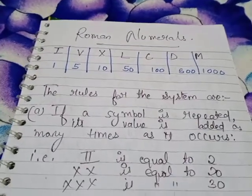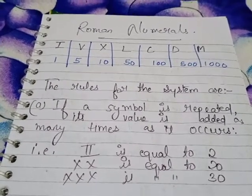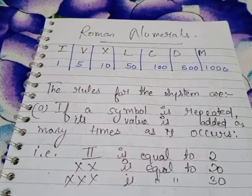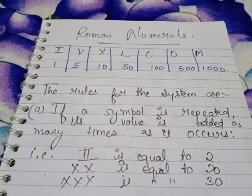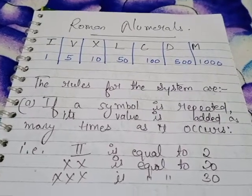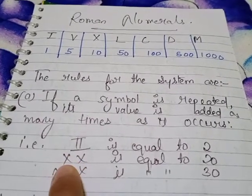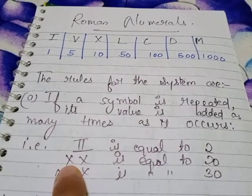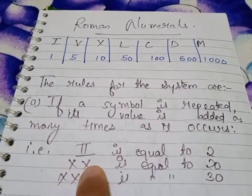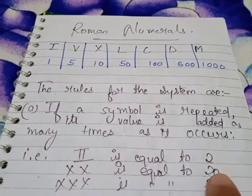The first rule: if a symbol is repeated, its value is added as many times as it occurs. Any symbol, when written again and again, its value is added to itself. If I repeat X two times — X's value is 10 in Roman numerals — when repeated, its value will be added: 10 plus 10 becomes 20.